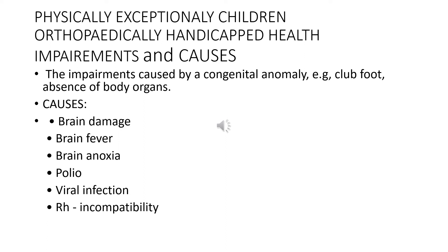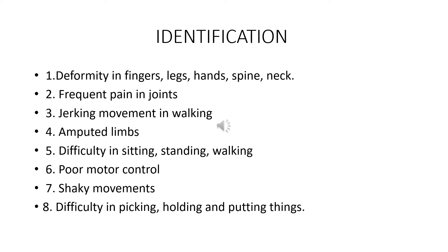The impairment caused by a congenital anomaly — that is, clubfoot or absence of a body organ. The causes are brain damage, brain fever, brain anoxia, polio, viral infection, and RH incompatibility. Identification can be done by observing deformity in fingers, legs, hands, spine, neck, frequent pain in joints, jerking movement in walking, amputated limbs, difficulty in sitting, standing, and walking, poor motor control, shaky movement, and difficulty in picking, holding, and putting things.